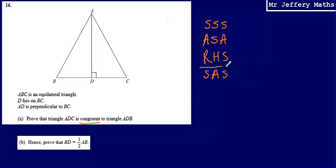One that we're going to pick here is going to be right angle, hypotenuse, side. The reason that we're picking that is because what we can see is that we've got two right angle triangles.